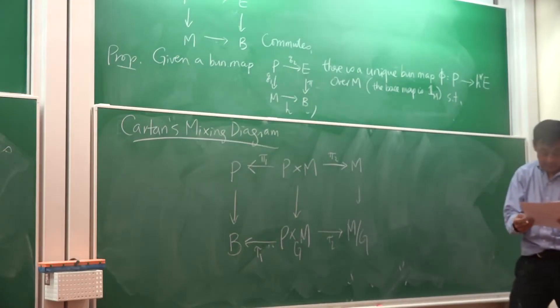Okay, so I have this commutative diagram. Now, this is called Carton's mixing diagram.